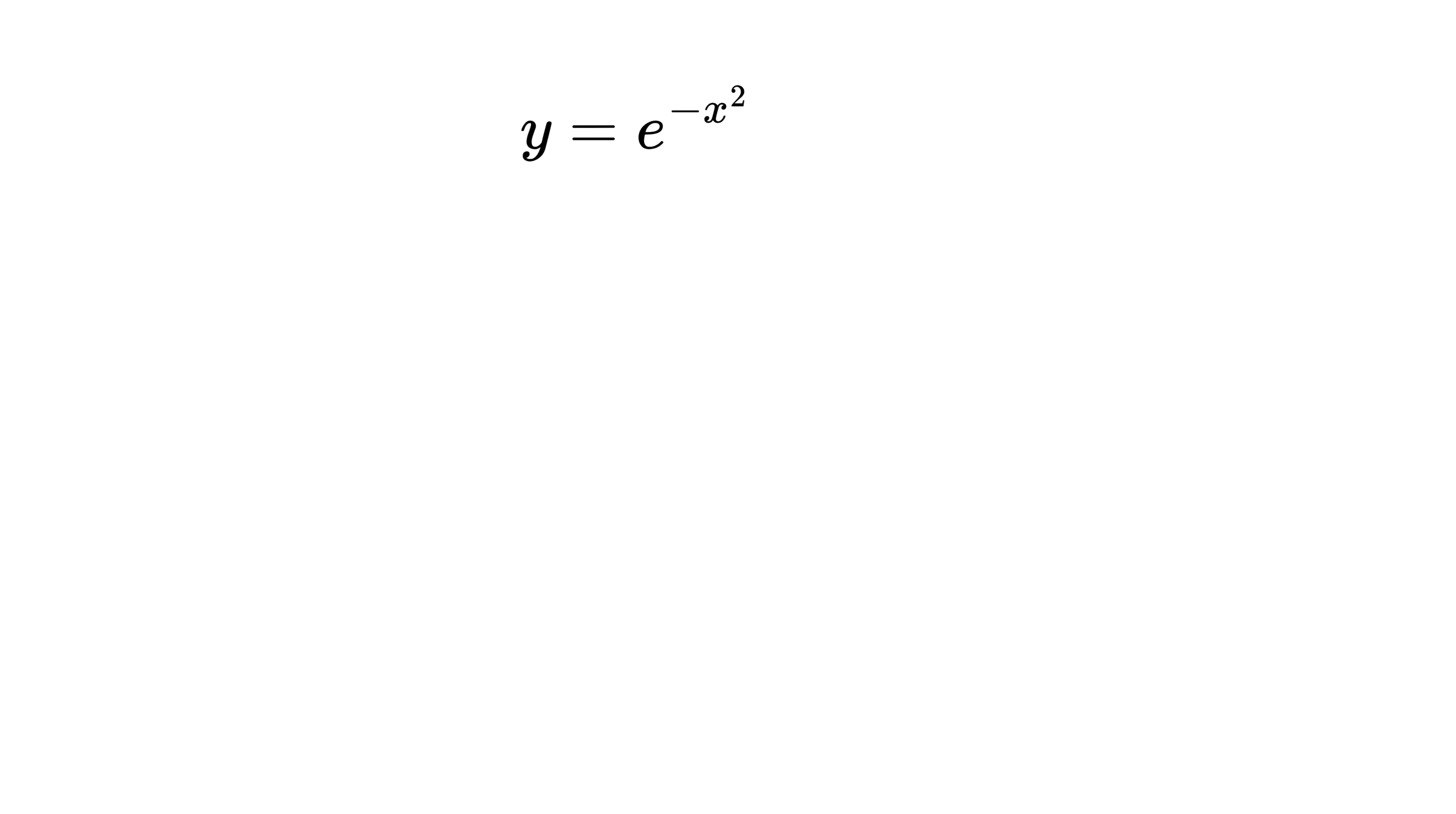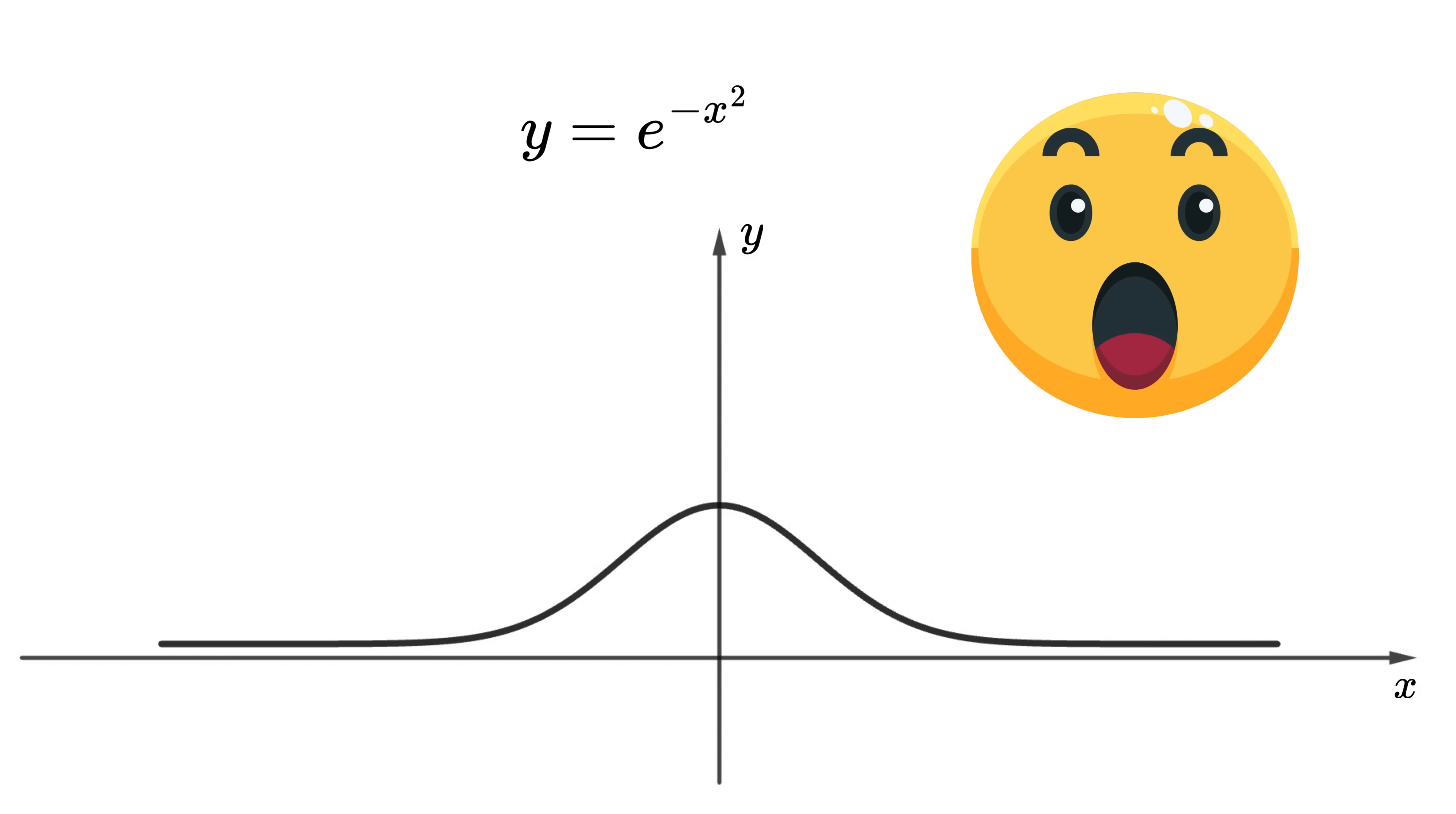You take the function e raised to minus x squared and plot it. It forms a beautiful, symmetric bell-shaped curve centered at zero.